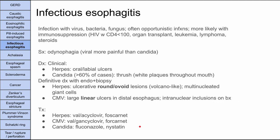Next is infectious esophagitis. The esophagus can be infected with a virus, bacteria, or fungus — usually opportunistic infections — and it's more likely in immunosuppressed patients, such as those with HIV with a CD4 count less than 100, prior organ transplant recipients, patients with leukemia or lymphoma, or those taking steroids. The main symptom is odynophagia. Viral esophagitis is generally more painful than candida. The main types to know are herpes esophagitis, CMV esophagitis, and candidal esophagitis.